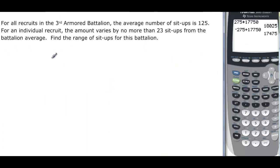For all recruits in the 3rd Armored Battalion, the average number of sit-ups is 125. For an individual recruit, the amount varies by no more than 23 sit-ups from the battalion average. Find the average. One thing that's important here is this 'no more than'.